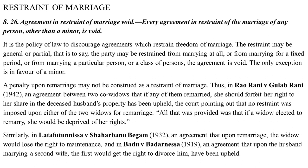However, a penalty upon remarriage may not be construed as a restraint of marriage. In Rao Rani vs. Gulab Rani, an agreement between two co-widows that if either remarried she would forfeit her share in the deceased husband's property was upheld — no restraint was imposed on remarriage, only a consequence. Similarly, agreements that upon remarriage a widow would lose maintenance rights, and that upon the husband marrying a second wife the first wife would get the right to divorce him, have been upheld.